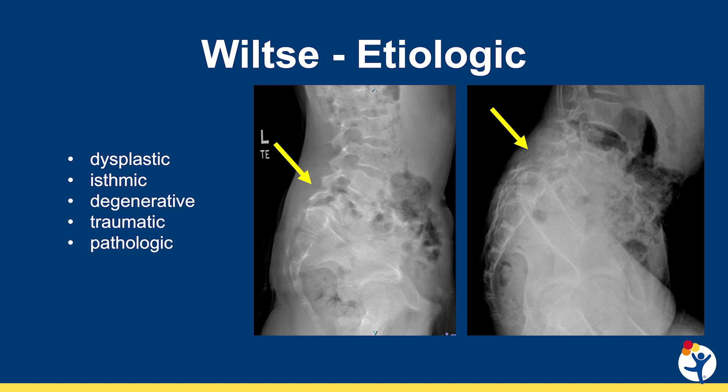Less common types are degenerative, traumatic, and pathologic, which are primarily seen in adults.